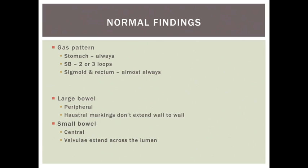The bowel gas pattern seen should give you a lot of information, and remember that gas appears black on x-rays. You should always expect to see some air in the stomach, in two or three loops of small bowel, and almost always in the sigmoid colon and rectum. Seeing more gas than this may suggest the presence of bowel obstruction.